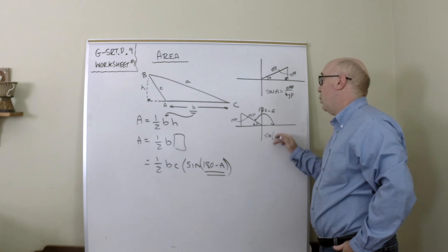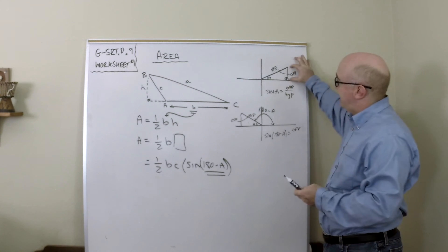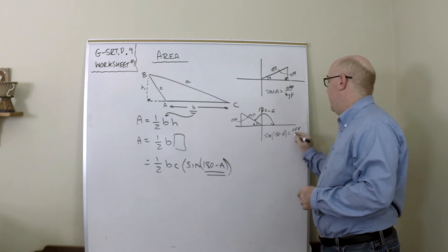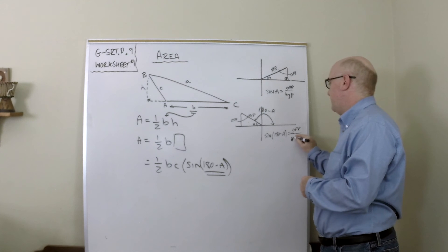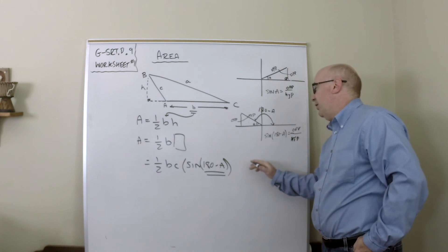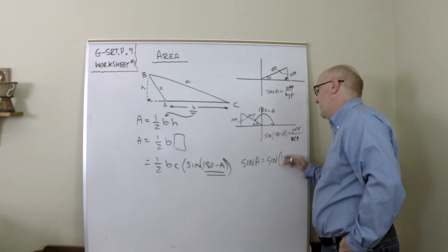The sine of 180 minus A would give you the exact same opposite height and the exact same hypotenuse size. And so we learn that the sine of A is the same as the sine of 180 minus A.